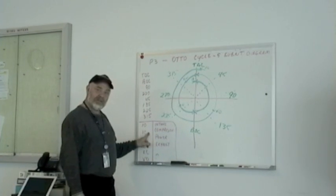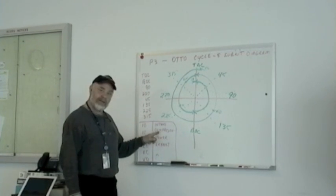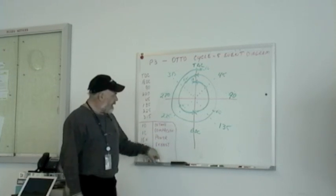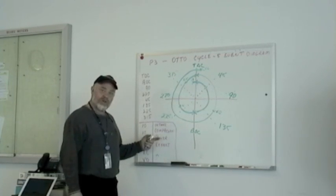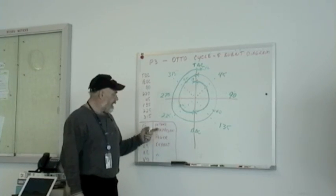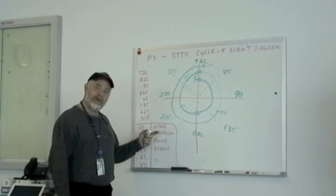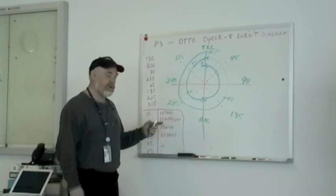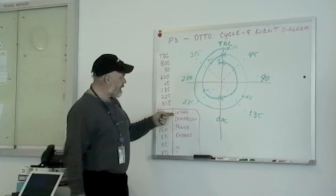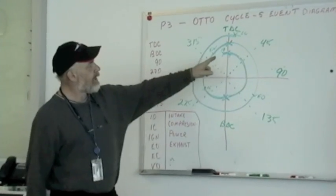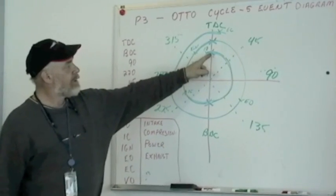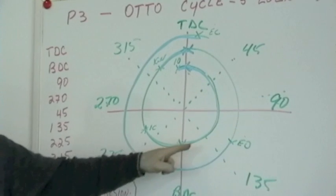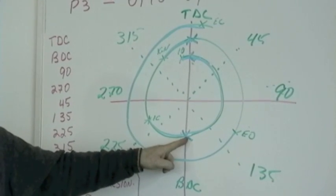Now we will place the strokes. There are four strokes; each stroke is 180 degrees of crankshaft travel. The first stroke is the intake stroke. The intake stroke starts at top dead center, travels for 180 degrees, and finishes at bottom dead center.